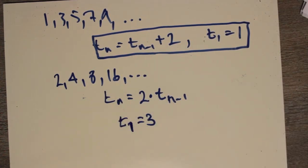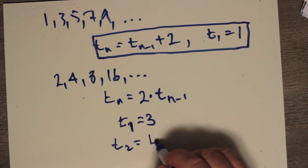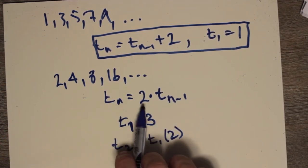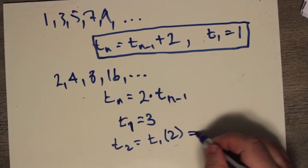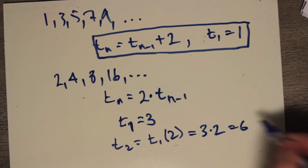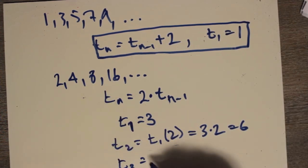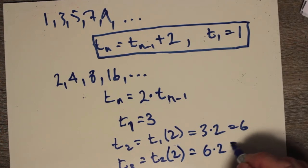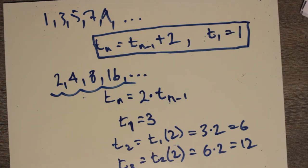Would I be able to generate this? Well, let's take a look. t2 equals t1 multiplied by 2, right? Because we're multiplying the previous term by 2. Well, that means 3 times 2, which is 6. Do I get 6 here? No. Well, t3, this'll be t2 times 2, which is 6 times 2, which is 12.